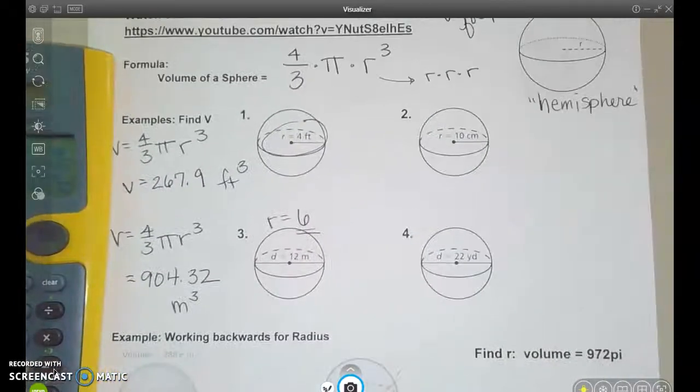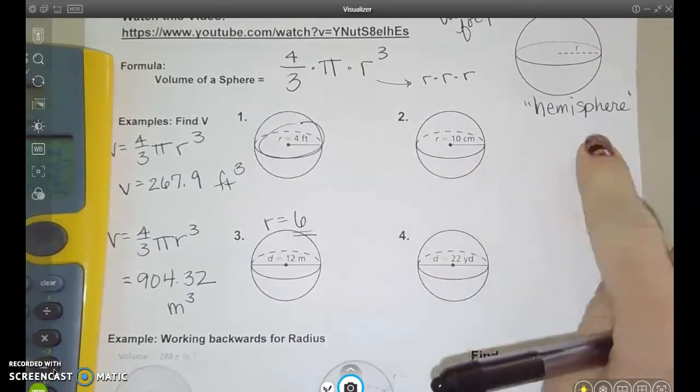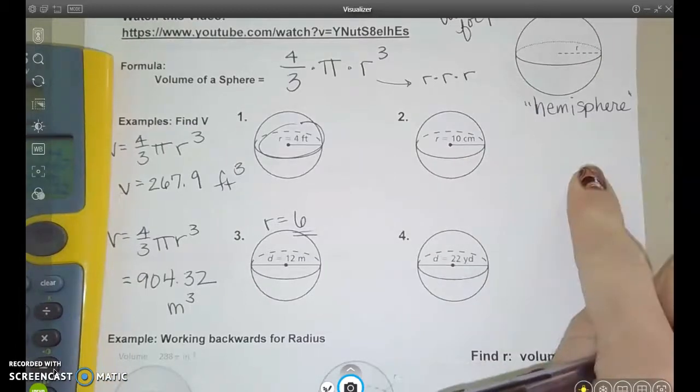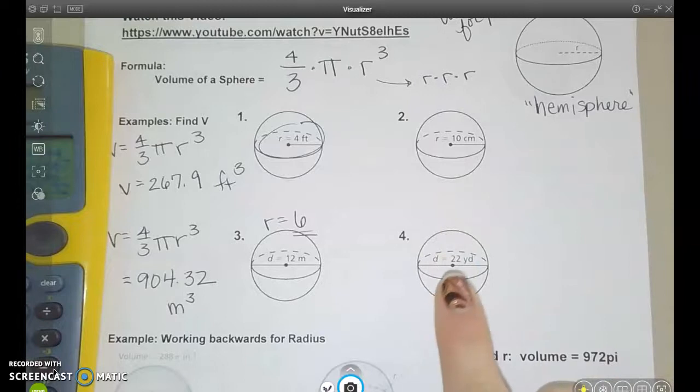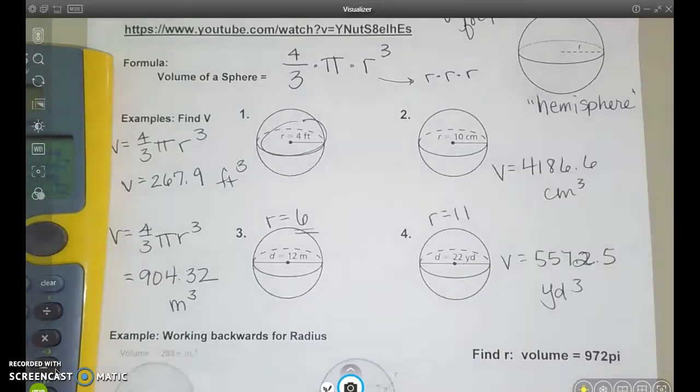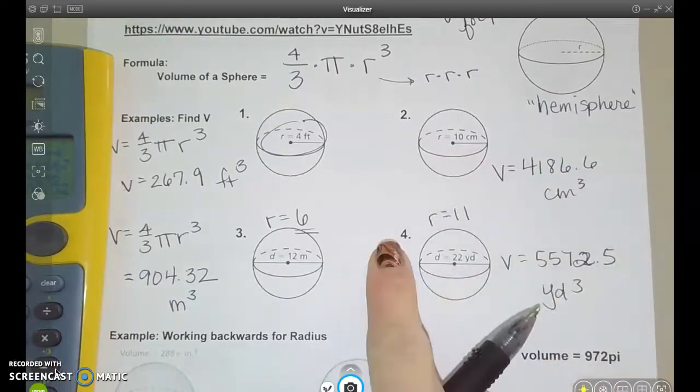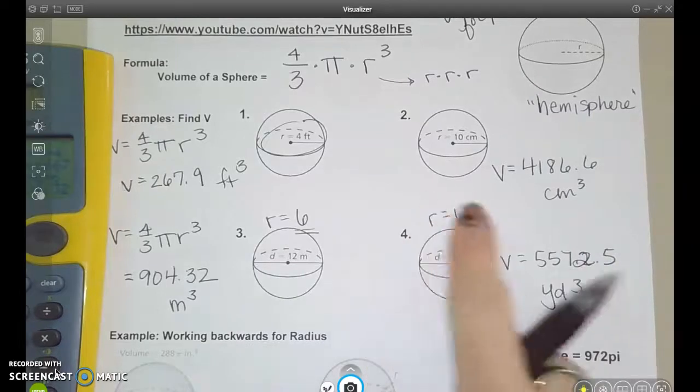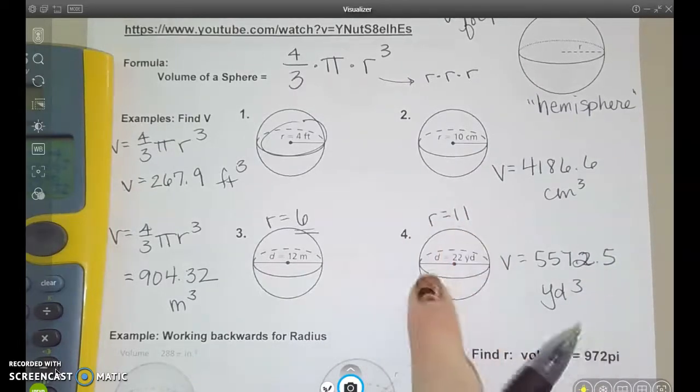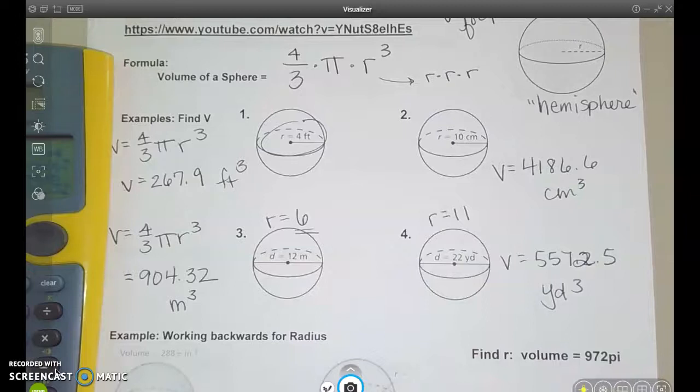So go ahead. You can do number two and number four. Start by writing the formula, and then you can type it into your calculator. Do two and four, and then we'll check when you're ready. Here's the answers I got for number two when I typed in a radius of 10, and for number four when I used a radius of 11. Cut your diameter in half to get the radius if you need to.